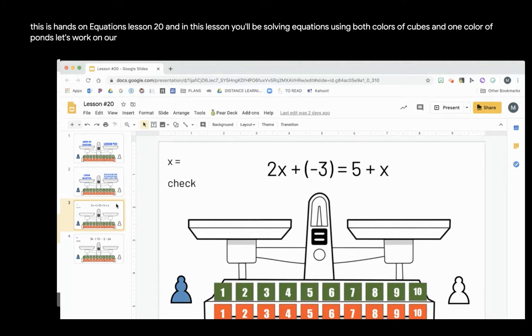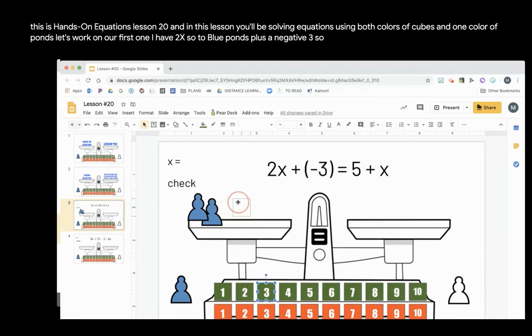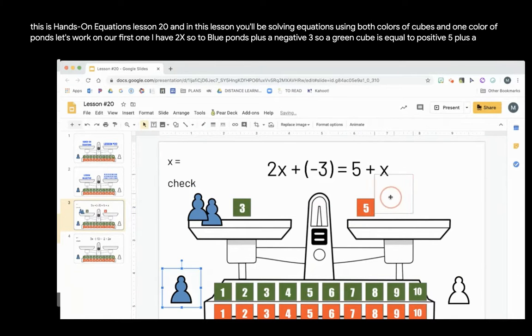Let's work on our first one. I have 2x, so two blue pawns, plus a negative 3, so a green cube, is equal to positive 5 plus a blue pawn.